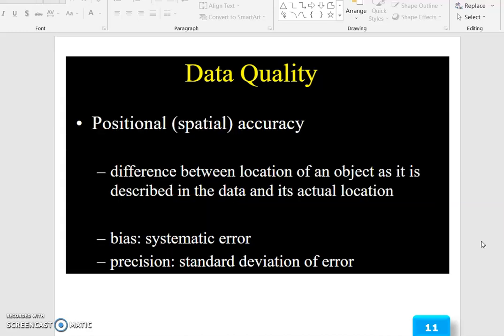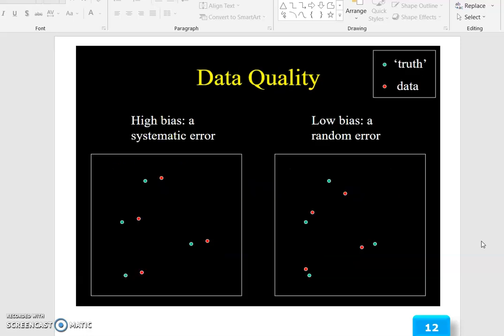Positional or spatial accuracy is the difference between location of an object as it is described in the data and its actual location. Bias refers to systematic errors. Precision is the standard deviation of error.